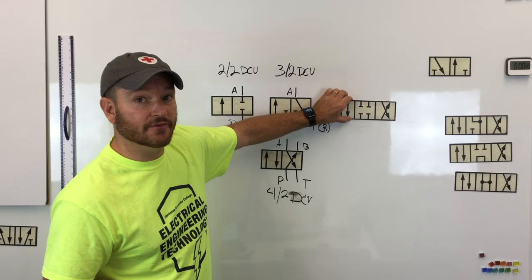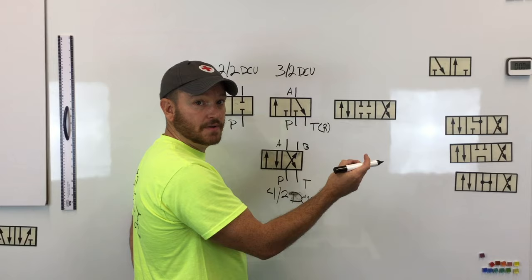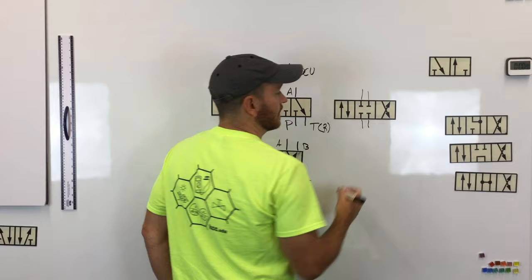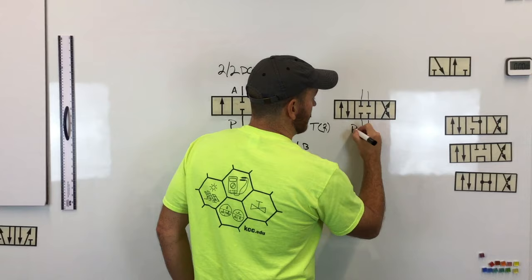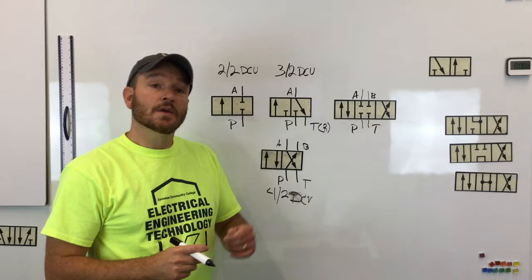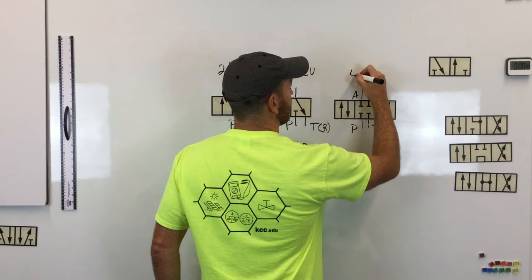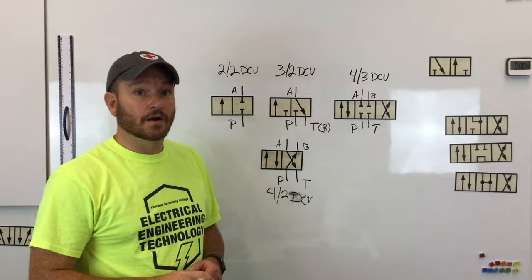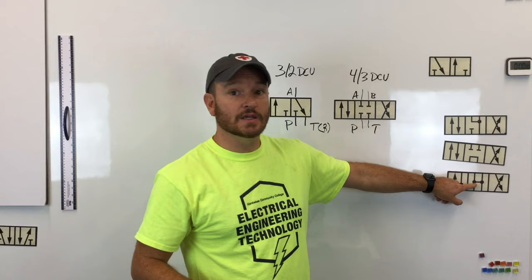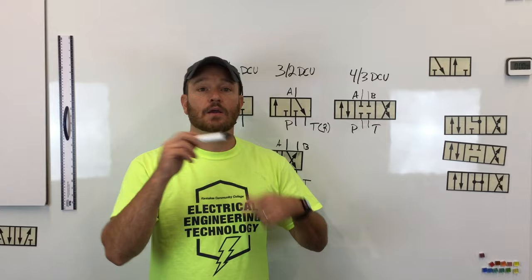The next valve is a three-position valve with four ports, labeled the same way as the four-two: P, T, A, and B. This would be a four-three directional control valve. As you can see, there are a number of different center configurations you can have with a four-three directional control valve. I have other videos that go through the advantages and disadvantages of each one, and I'll link those below.